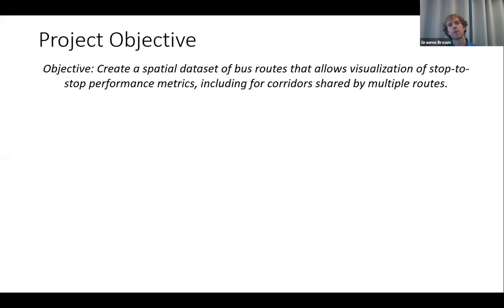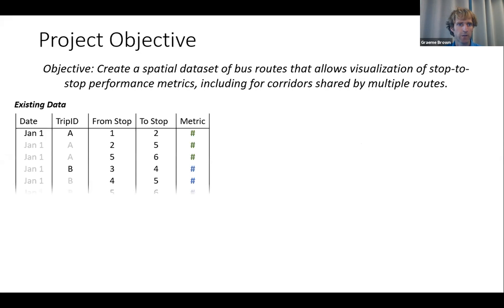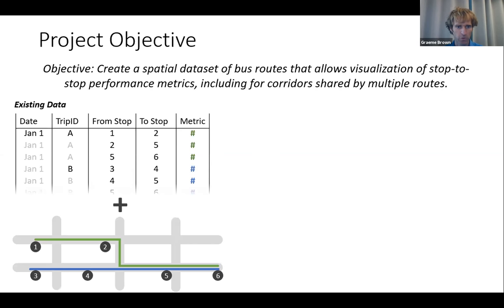The project objective was to create a spatial dataset of bus routes that allows visualization of stop-to-stop performance metrics, including for corridors shared by multiple routes. We weren't answering a specific question — we were creating a spatial dataset useful for answering many questions, addressing a challenge we kept running into in our analyses. A lot of you probably have data where each row represents a segment traversal by a vehicle on a particular date, traveling from stop to stop, with metrics like passenger load.